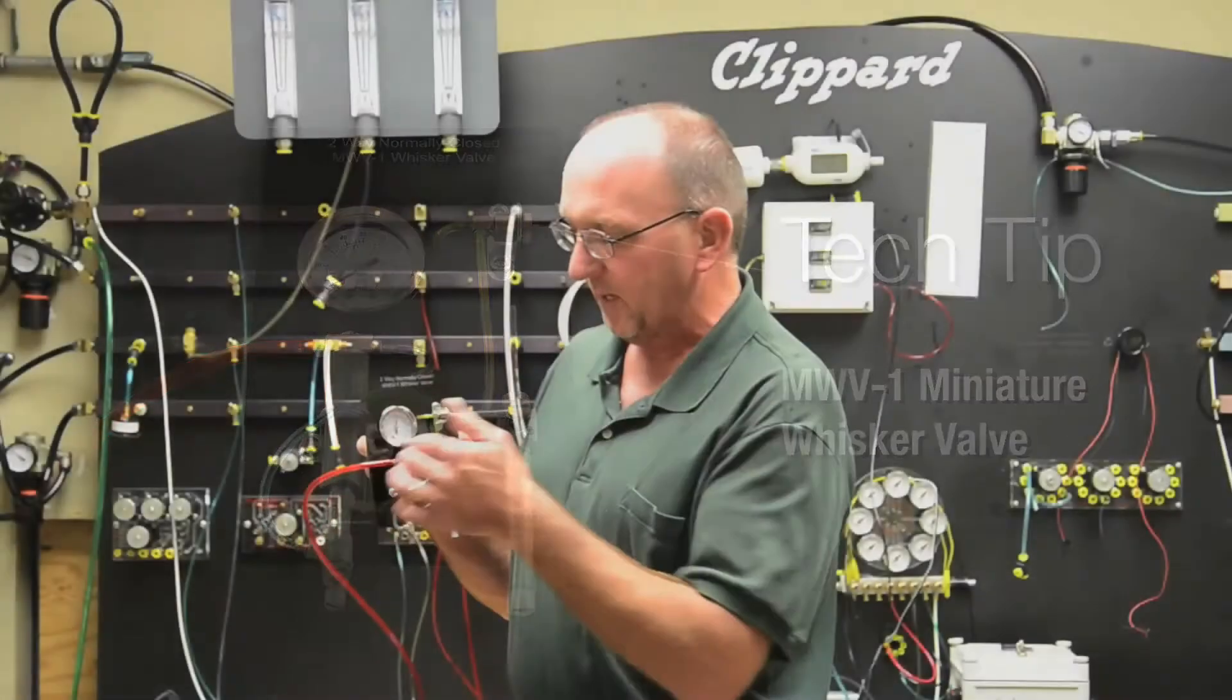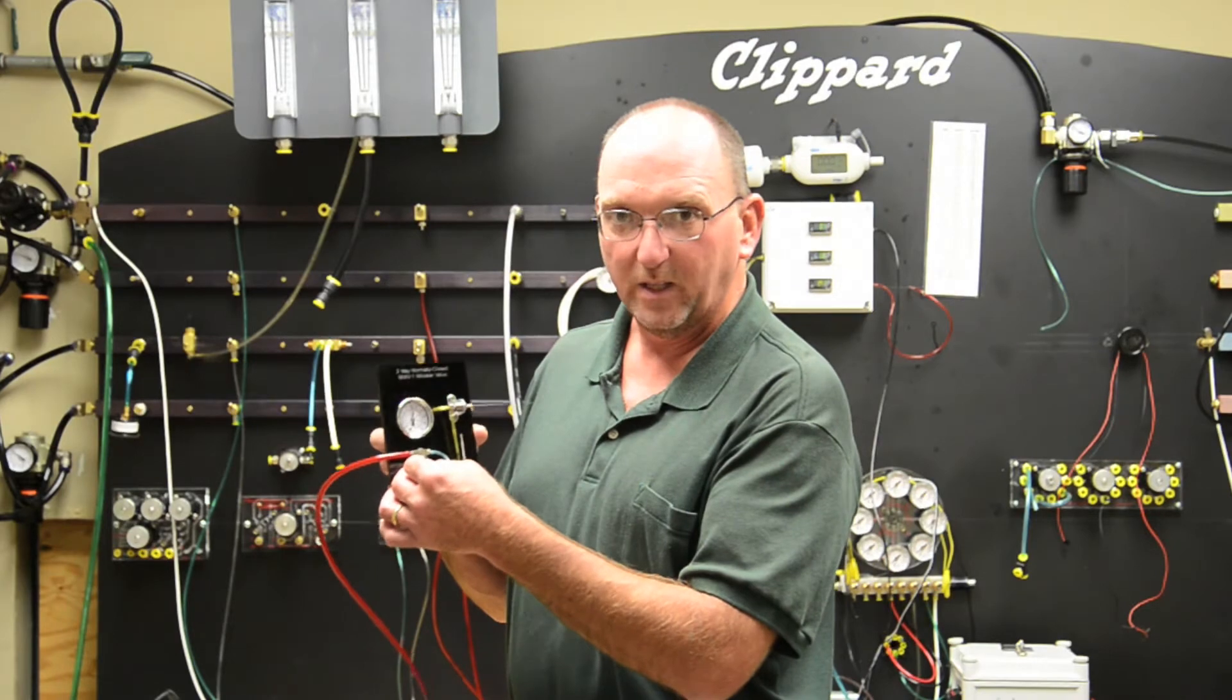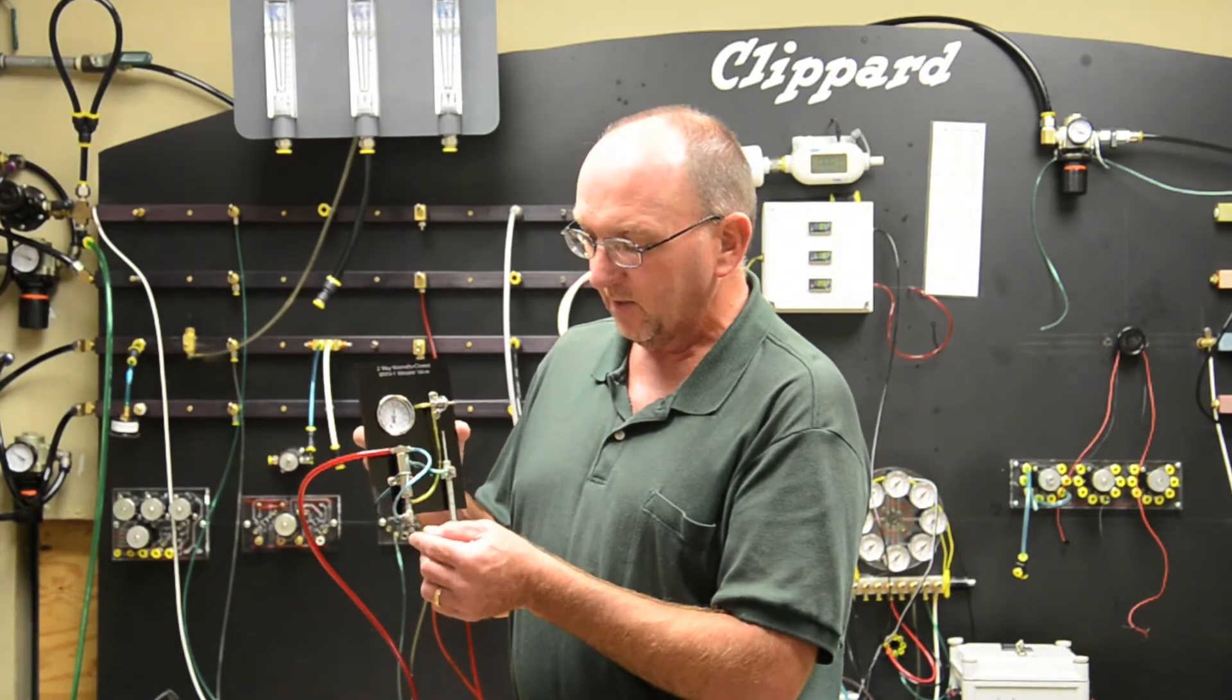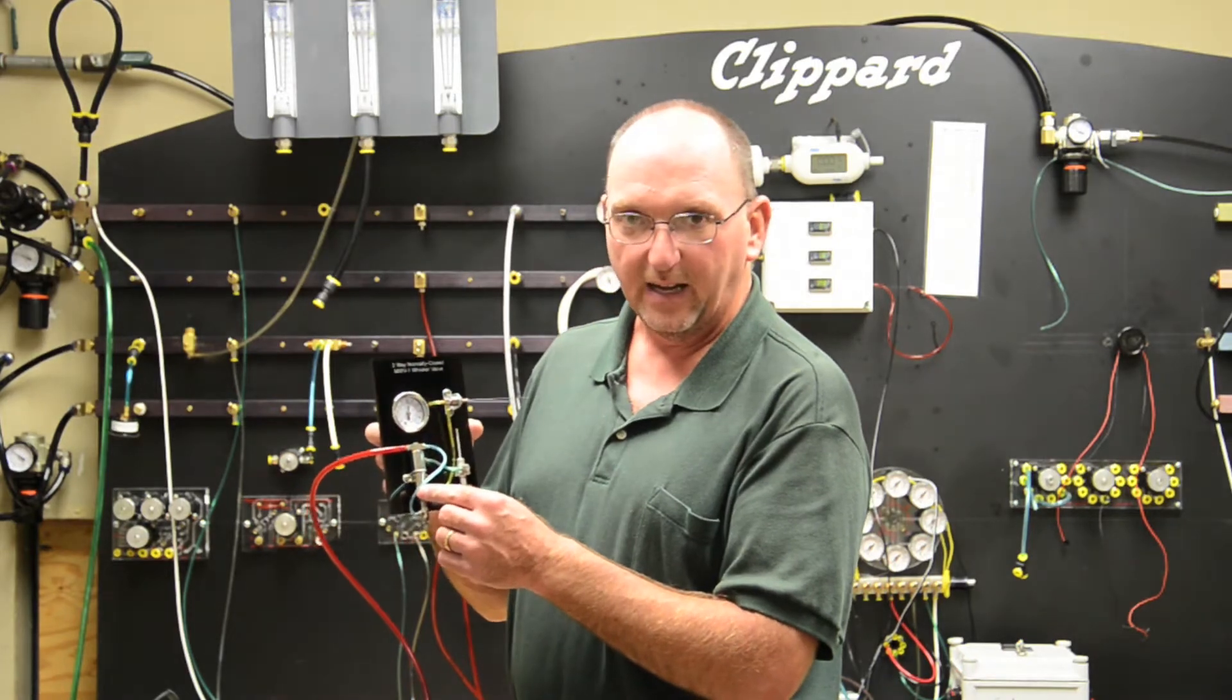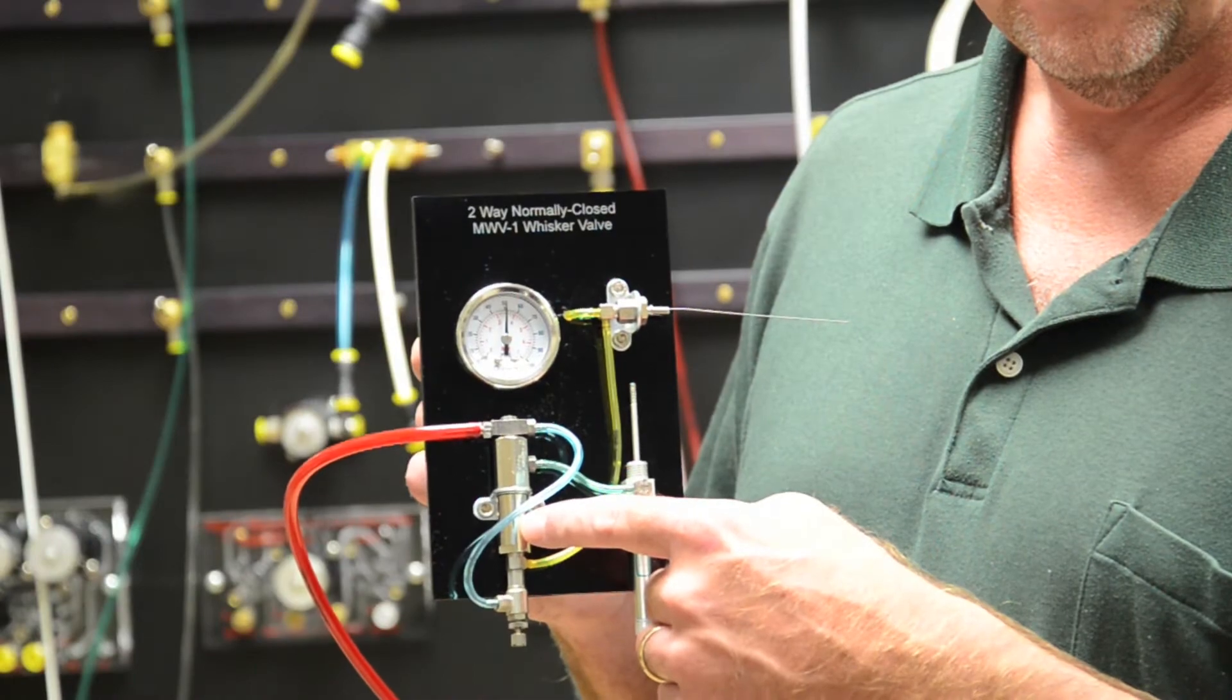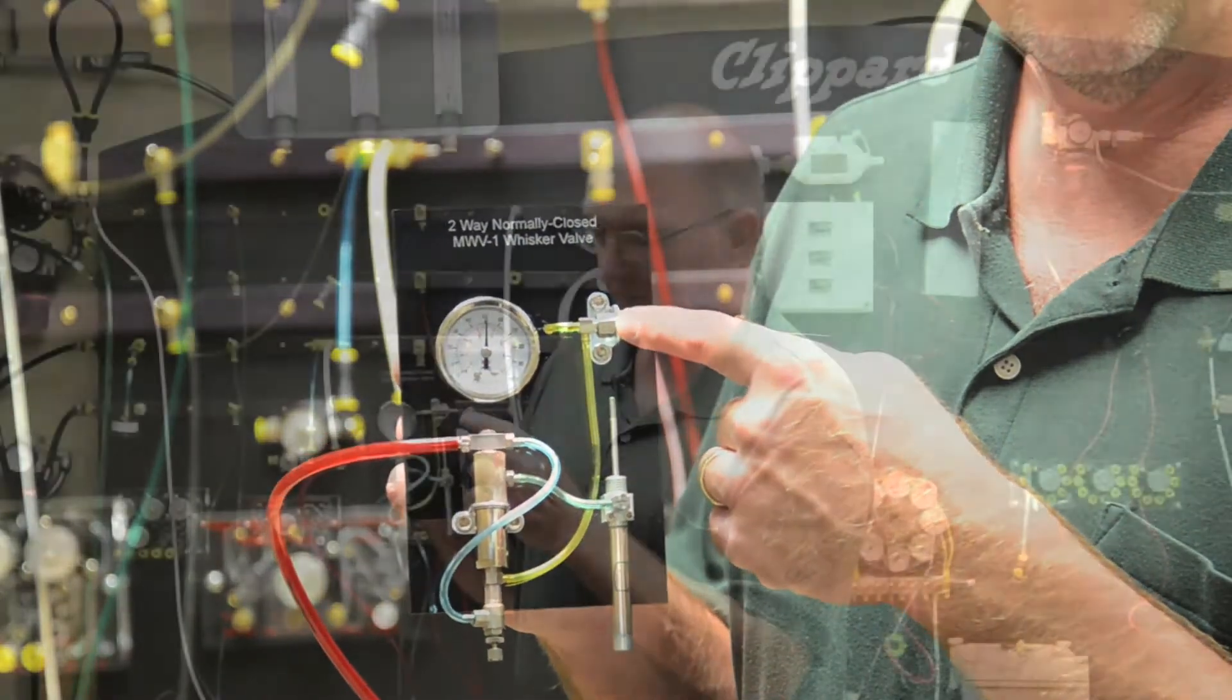Basically we have supply pressure coming into the normally open three-way valve. That supply pressure is also teed through a needle and into a pilot operator holding that normally open valve closed. Along with the teed in pressure from the needle, we have pressure coming up to the whisker valve.